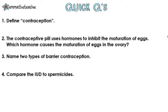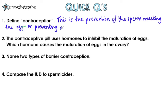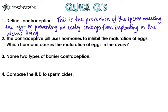We're going to try some questions now, so pause the video, try and answer them, and press play when you're done. Question 1: Define contraception. This is the prevention of the sperm meeting the egg, or preventing an early embryo from implanting into the uterus lining.